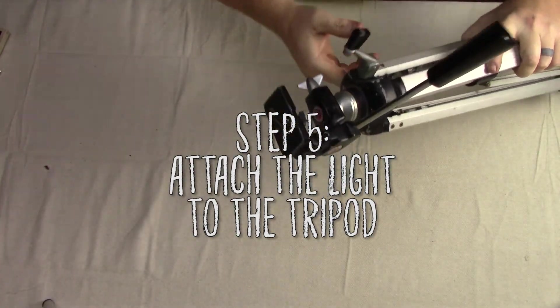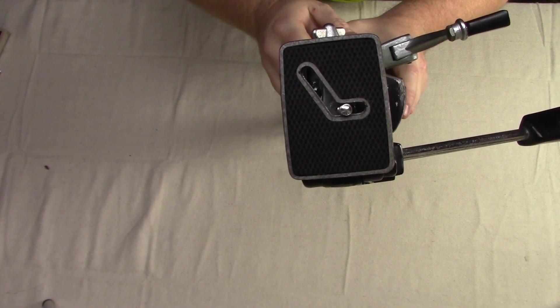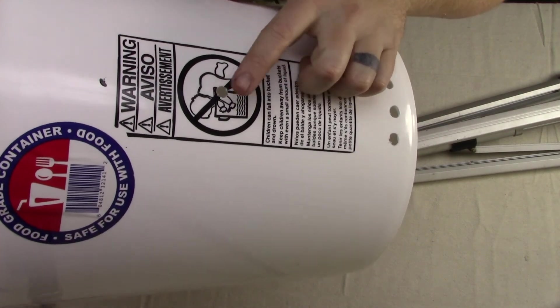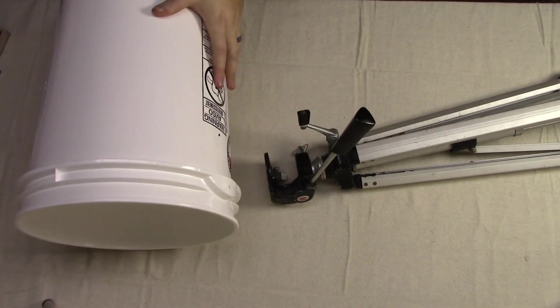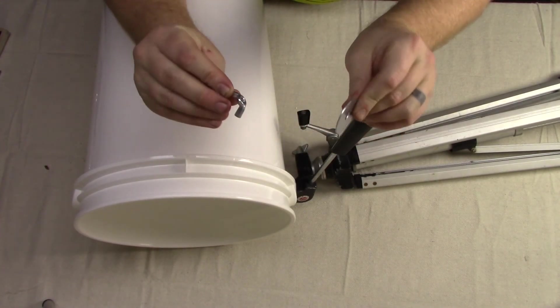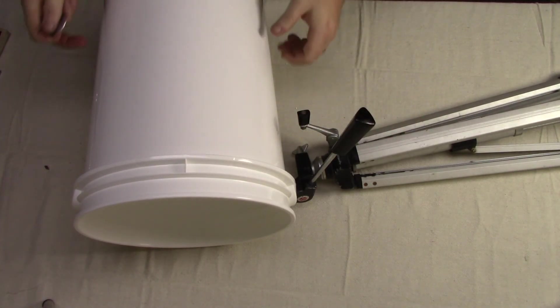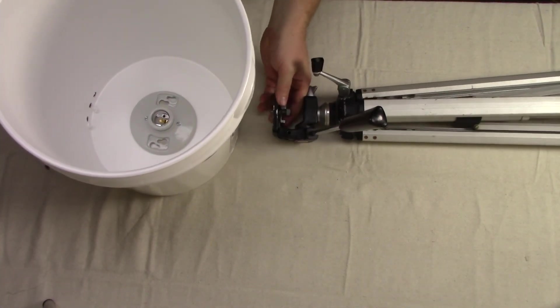Step 5, attach the light to the tripod. Here is the bolt that we will be attaching the light to, and here is the hole it will be going into. Now grab the 1 quarter inch washer and wing nut. The order of assembly is the tripod bolt goes into the bucket, the washer then goes onto the bolt, and the wing nut gets screwed on tightly after that, which will secure everything nicely in place.